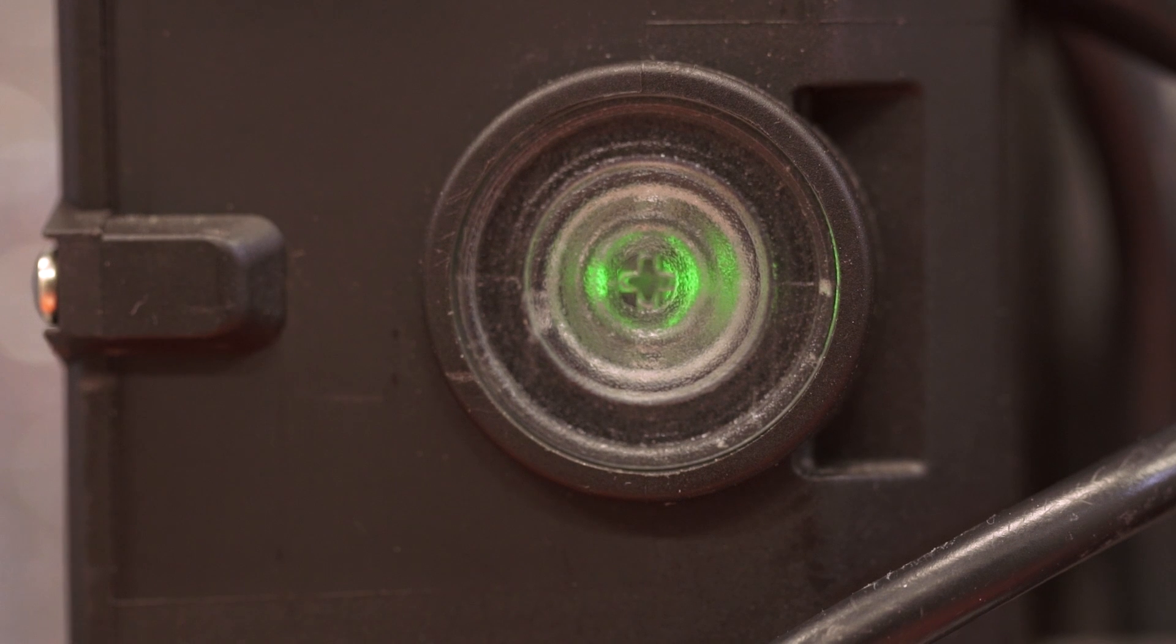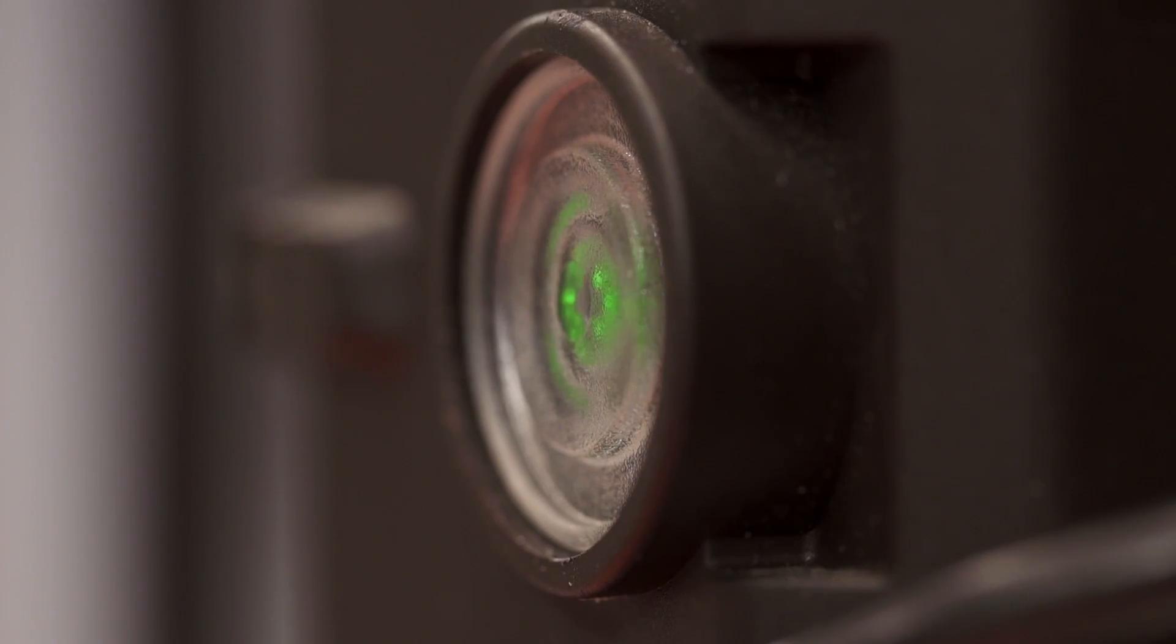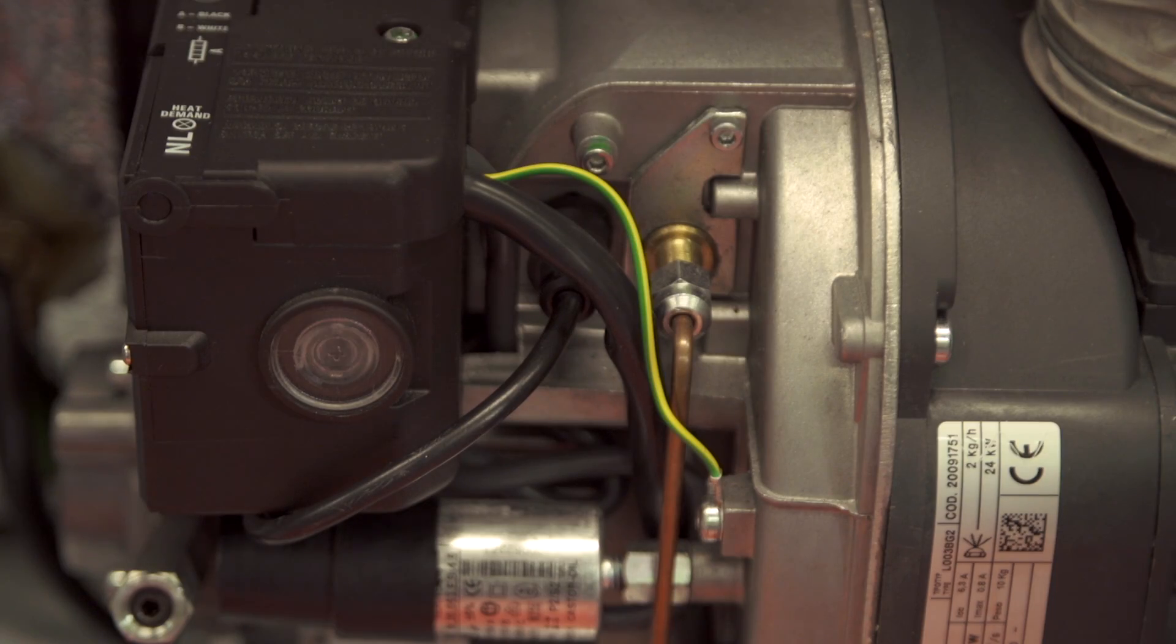So, when the burner is running normally, the reset button will be green, and if it locks out, it'll change to red. Other operating modes and faults are indicated by different colours. Check in the installation instructions for details.